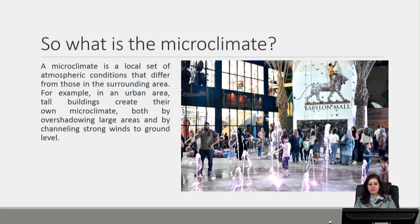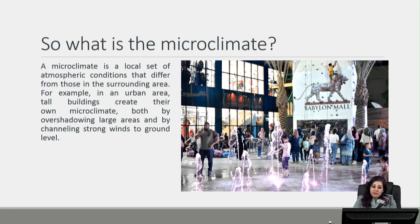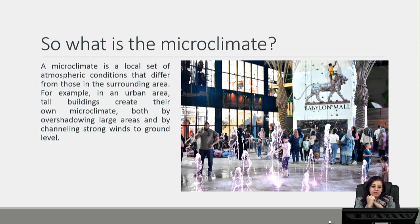So what is the microclimate? A microclimate is a local set of atmospheric conditions that differ from those of the surrounding area. For example, in an urban area, tall buildings create their own microclimate, both by overshadowing large areas and by channeling strong winds to ground level.